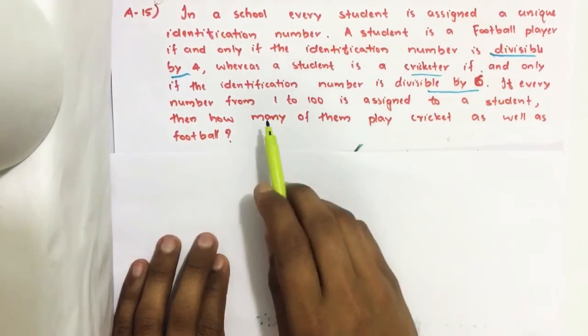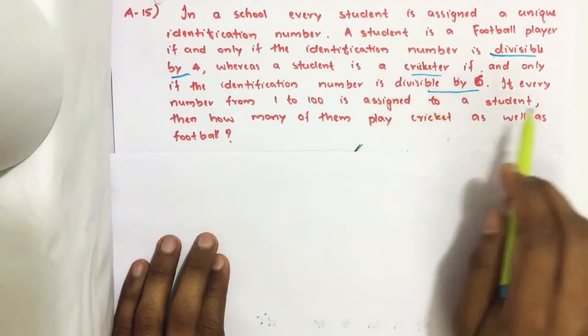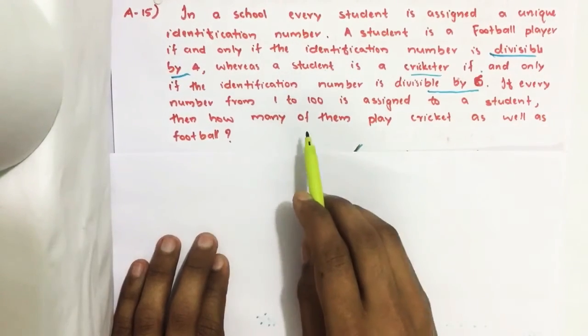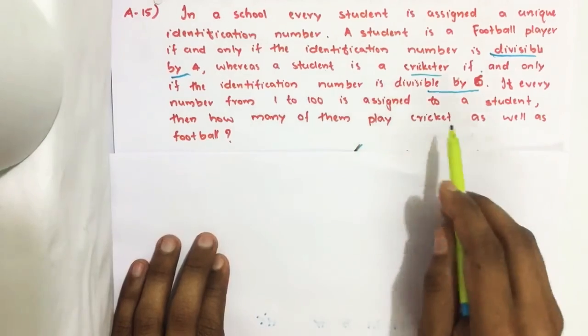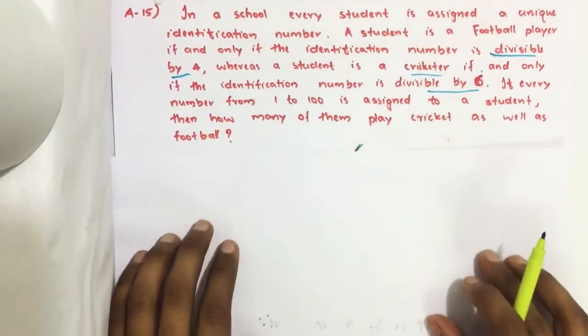If every number from 1 to 100 is assigned to a student, then how many of them play cricket as well as football? This is the question and we have four options also.